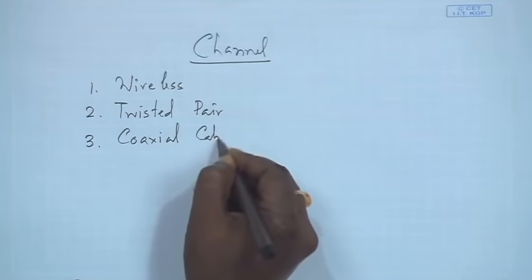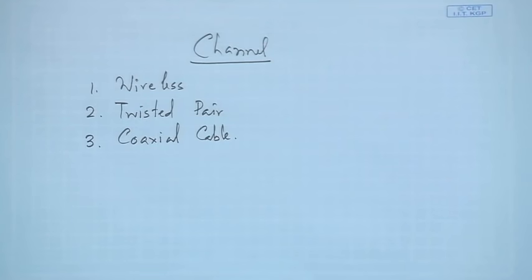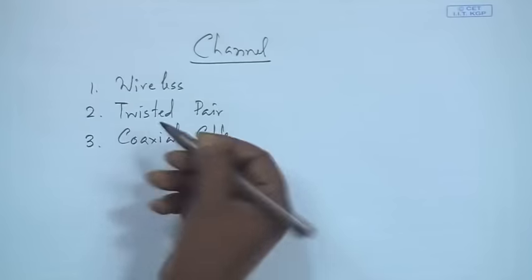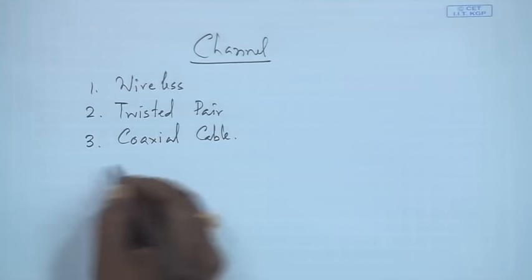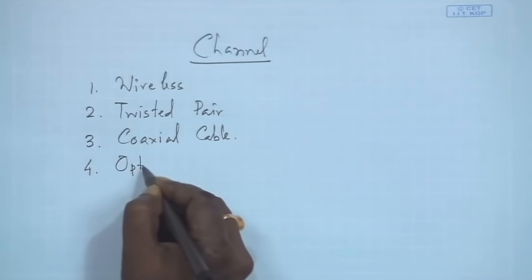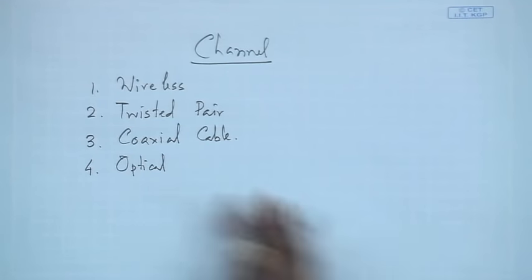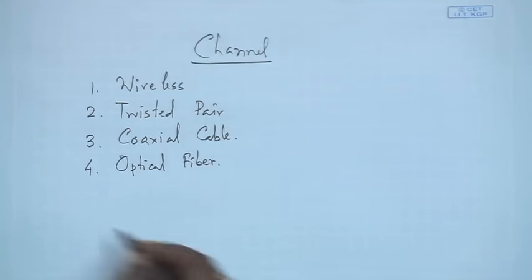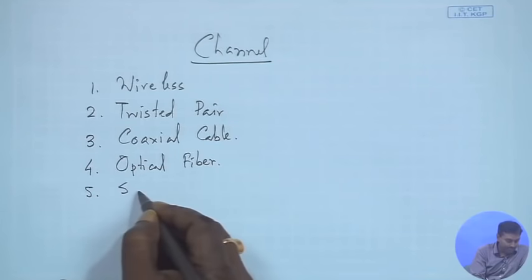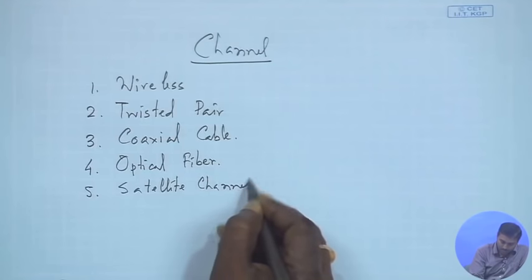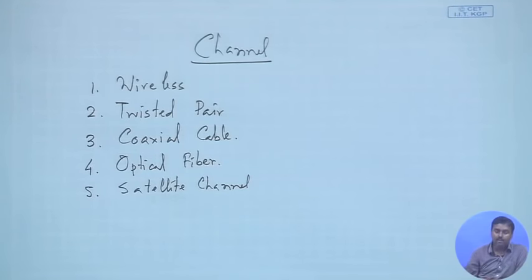Third is coaxial cable, which is mostly used for broadcasting television signals. Fourth is optical fiber, the latest one which supports a huge amount of bandwidth. Fifth might be satellite channel, and so on — there are multiple communication channels available.